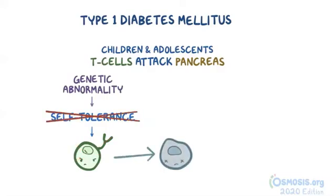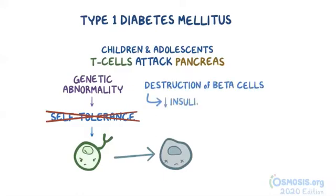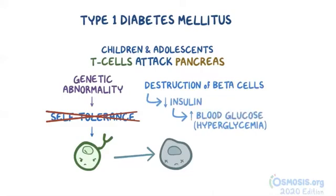The result is the destruction of the beta cells, which leads to decreased insulin production and hyperglycemia, or increased blood glucose.